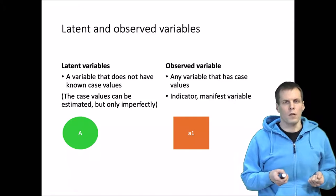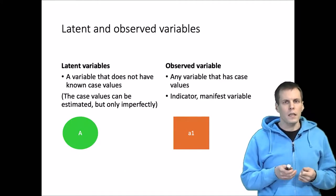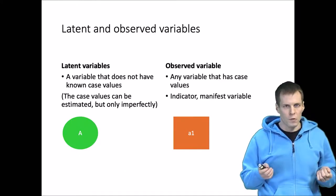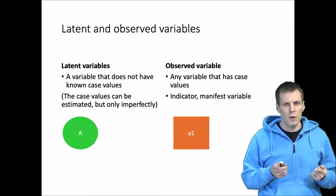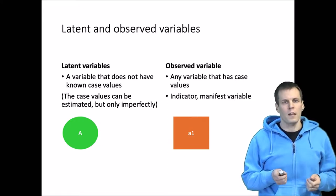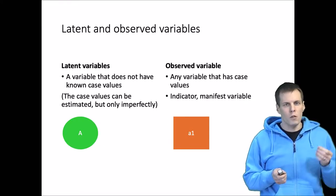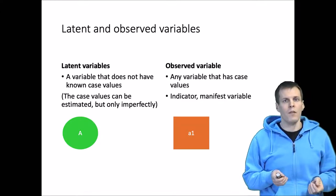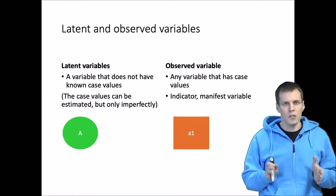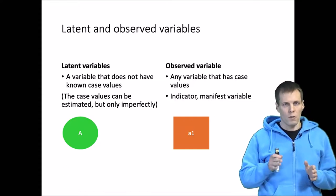Variables in a statistical model can be divided into latent variables and observed variables. The difference is that for observed variables we have scores for individual cases. If we have a dataset like an Excel sheet, then observed variables are columns in the data.